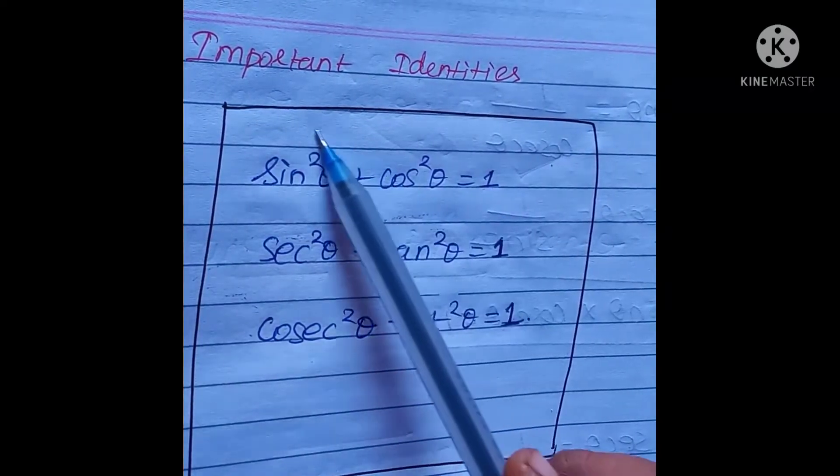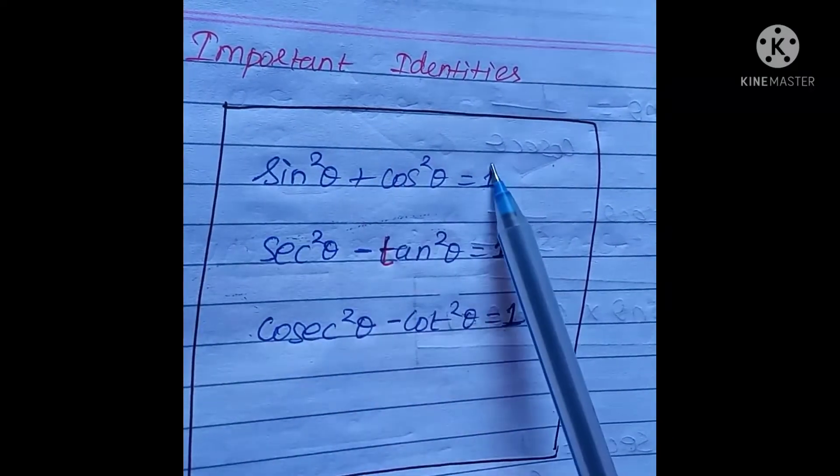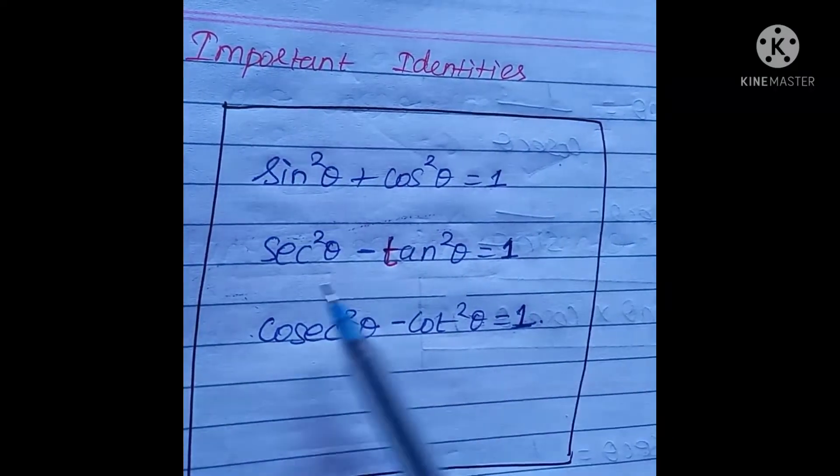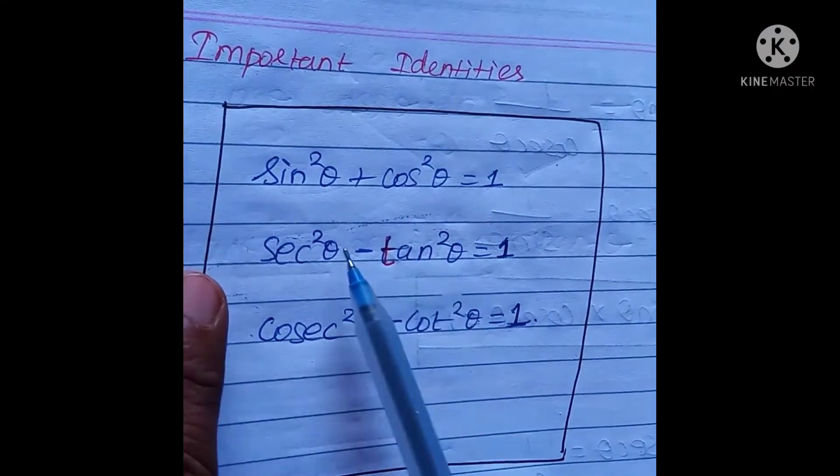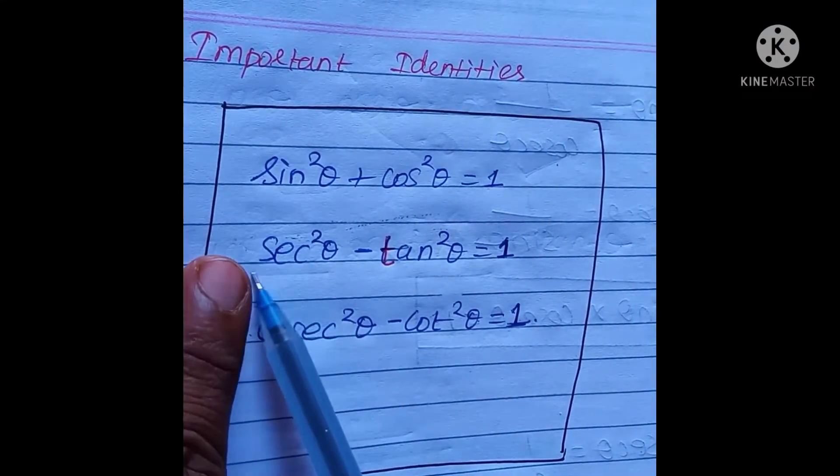We know sin² + cos² = 1. We know that term. But for sec² − tan² = 1, how do we know? How do you find it?